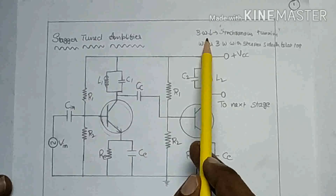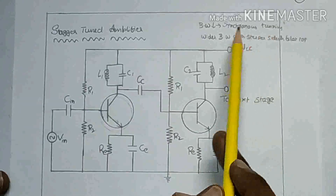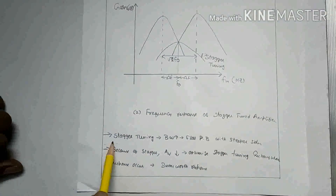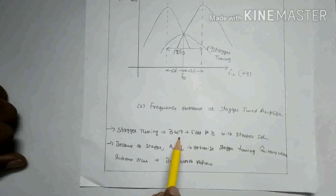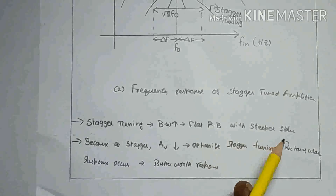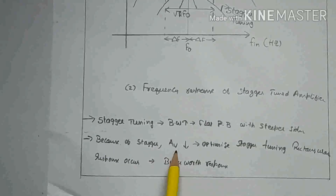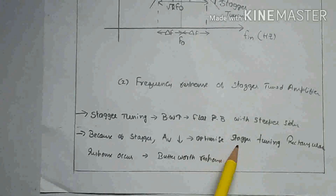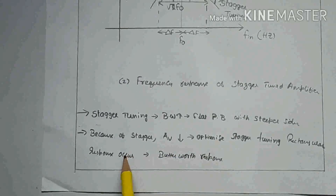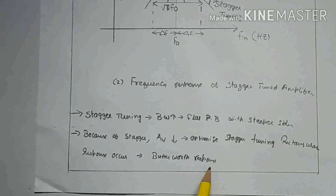When bandwidth decreases, we call it synchronous tuning — it produces a wider bandwidth with steeper sides and a flat top. Stagger tuning means the bandwidth increases and consists of a flat passband with steeper sides. Because of stagger tuning, voltage gain decreases. The optimized stagger tuning produces a rectangular response, which we call the Butterworth response.